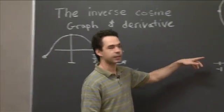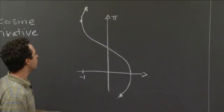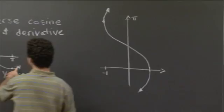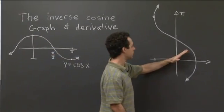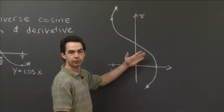So I've done that over here. So this is what we get when we reflect this curve, the y equals cosine x curve, when we reflect it through that diagonal line y equals x.